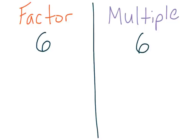Let's take a look at the number 6, and we're going to find some factors of the number 6, and then we're going to find some multiples of the number 6. When we factor out a number, we have to think about what can we multiply together in order to get 6 as a product. We start with 1 and 6 as factors, and then we go down our list of numbers.